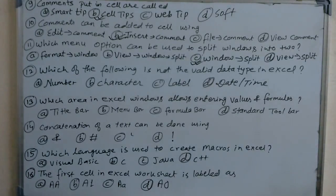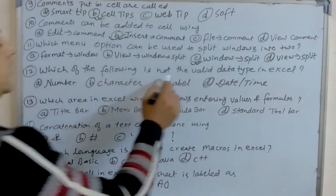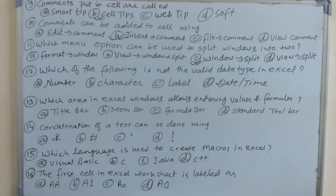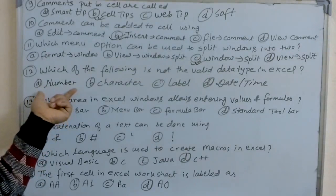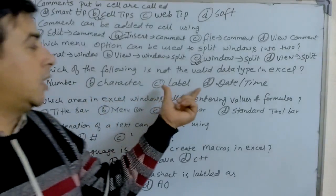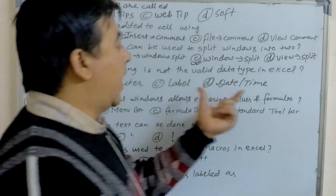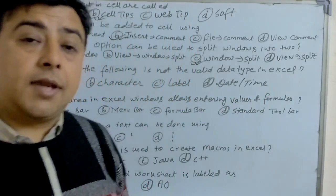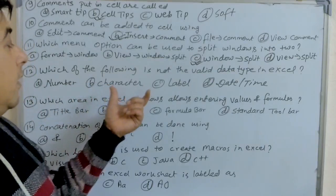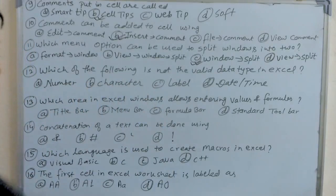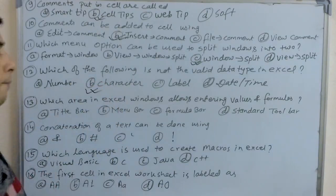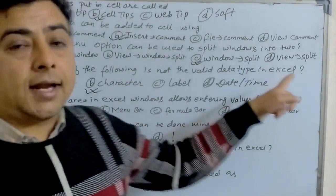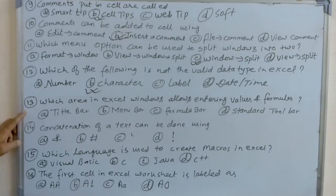The next question is: which of the following is not a valid data type in Excel? Number is a valid data type, label is also a valid data type, and date and time is also a valid data type. But character is not a valid data type in Excel. That's why B is the answer.